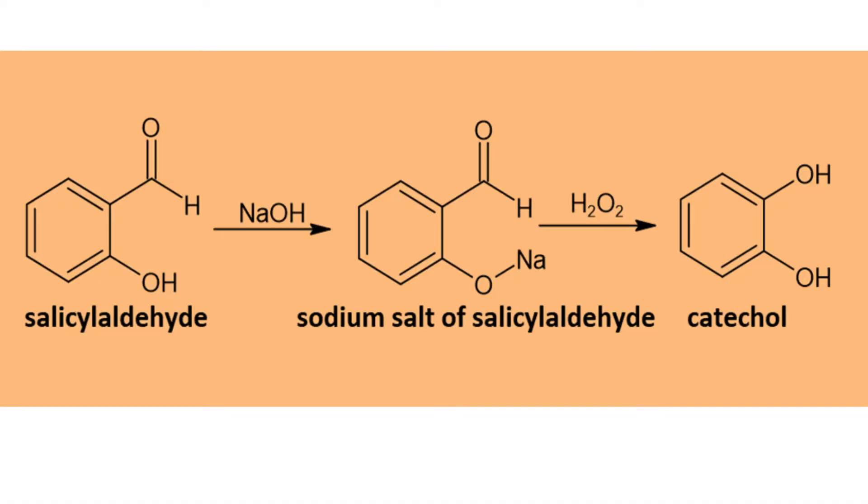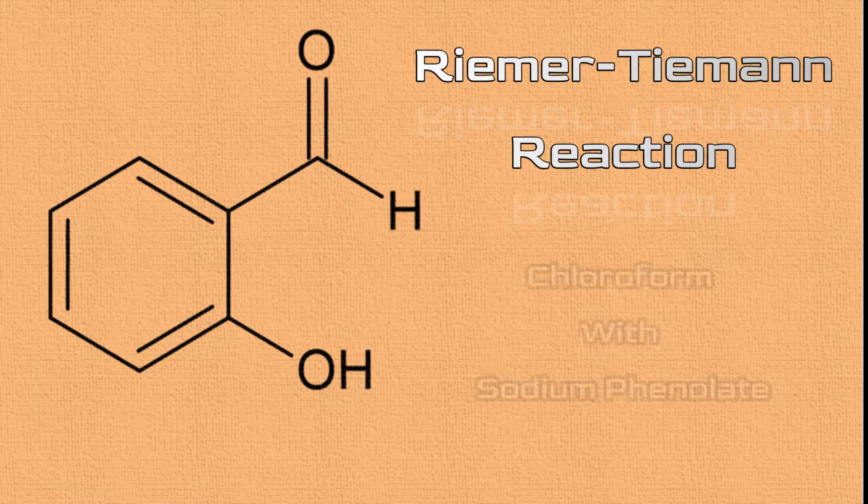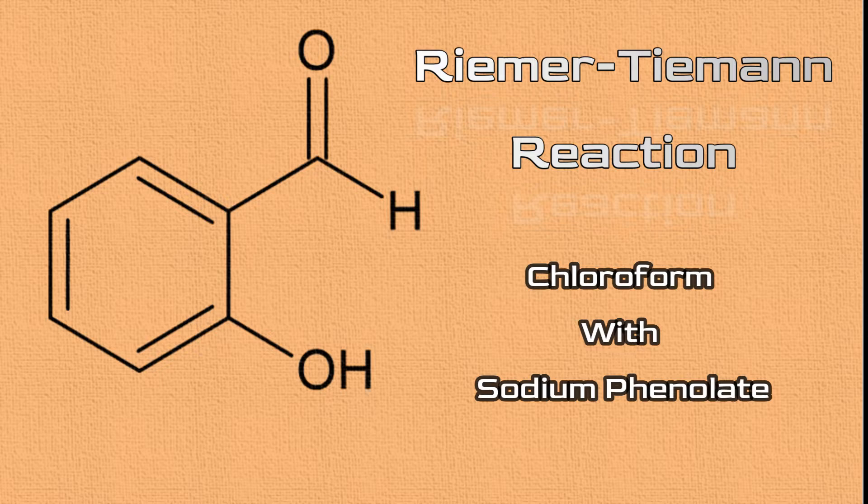In this operation we are going to obtain catechol using salicylaldehyde as a precursor. Salicylaldehyde is obtained by the Riemer-Tiemann reaction by reacting chloroform with sodium phenolate. You can see this reaction in one of my videos that I leave the link in the comments.